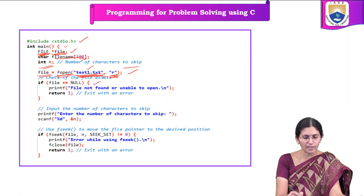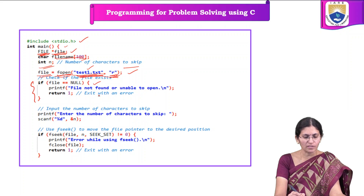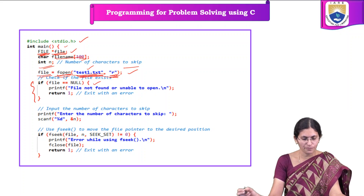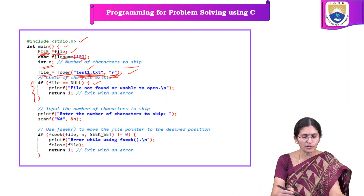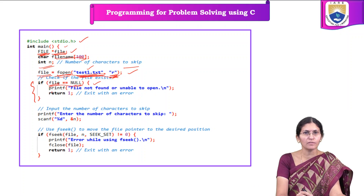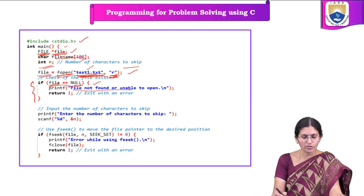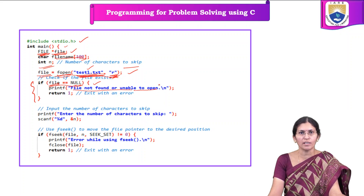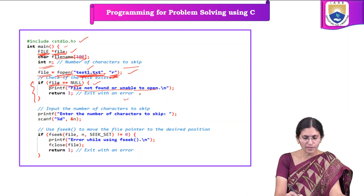If the file does not exist, we handle that error. If the file pointer contains a null value — that is, if file == NULL — then a message is printed on the screen: 'file not found or unable to open', and then the program exits with an error message.